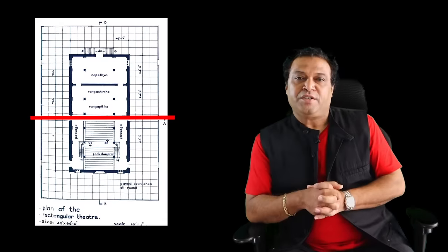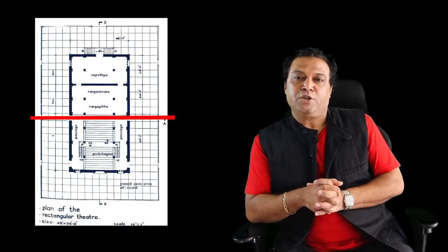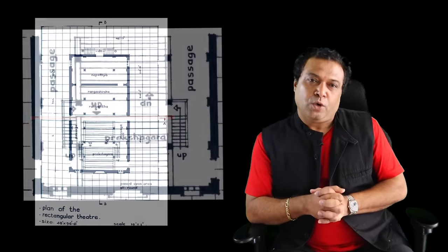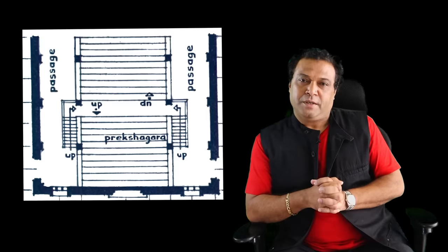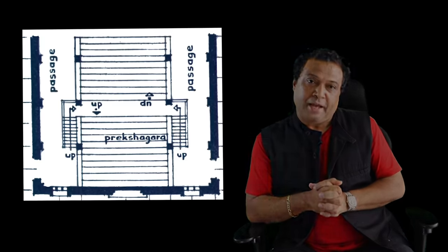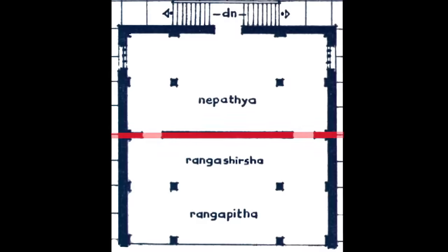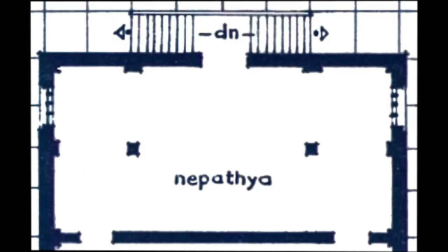The space inside was divided into two parts: one part being the auditorium, Preksha Gruha, and the other being equally divided into the stage — Rangashirsha upstage and Rangapitha downstage — and the green rooms called Nepathya Gruha.